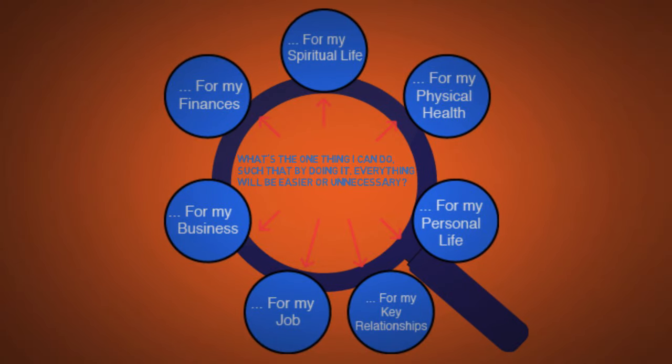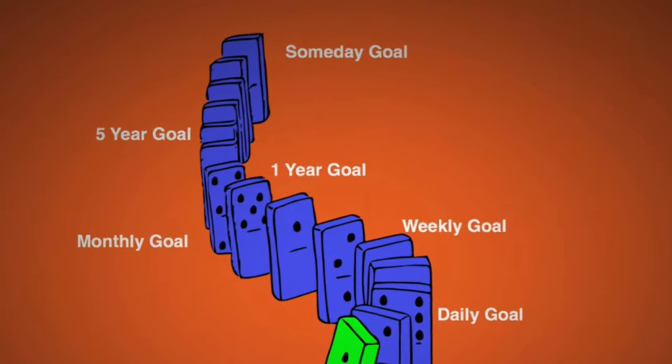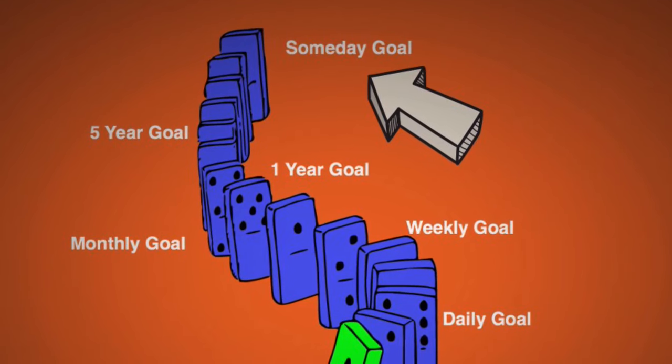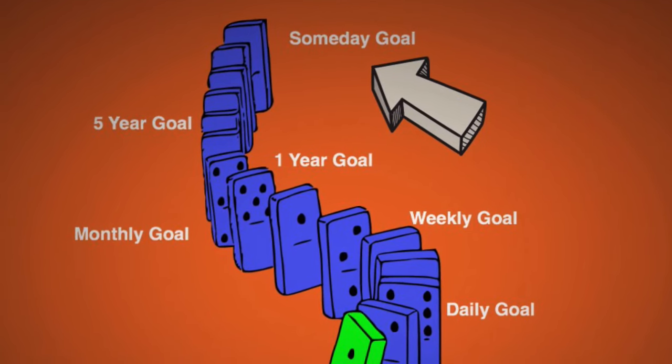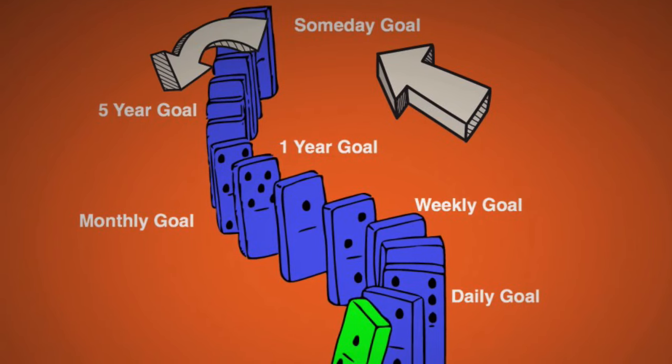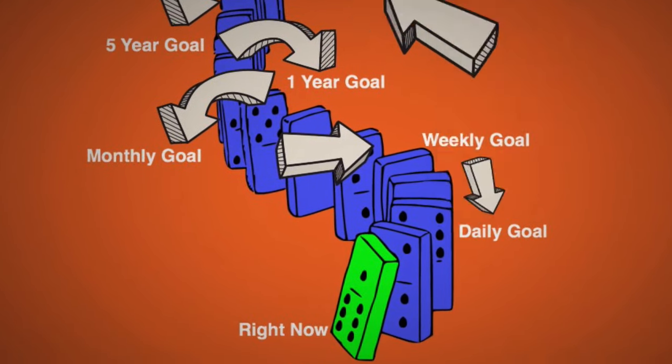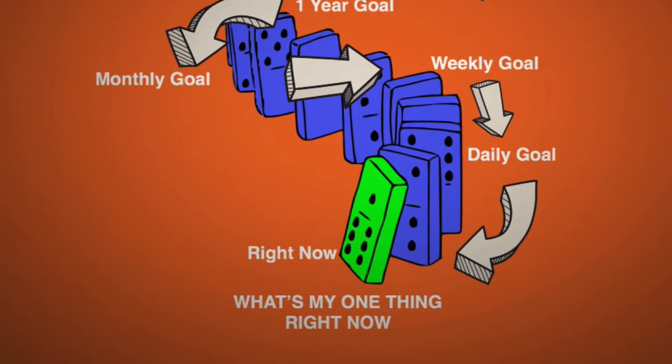You can ask this question for any aspect of your work or personal life, for both short-term and long-term goals. But avoid asking questions like, what do I do next? Instead think big and ask yourself what your someday goal is and then work your way backwards. Ask yourself, based on your someday goal, what is the one thing you can do in the next five years? Then based on your five-year goal, what's the best thing you can do this year? Keep doing this until you have figured out what's the one thing you can do right now.